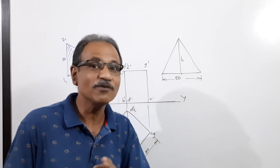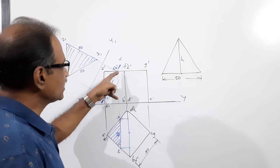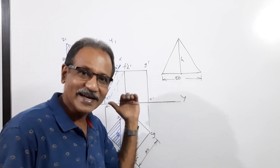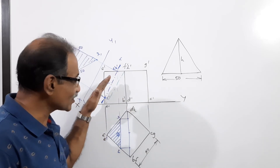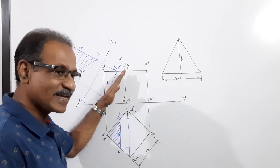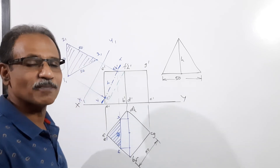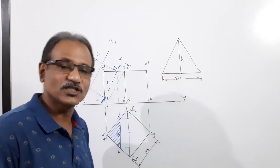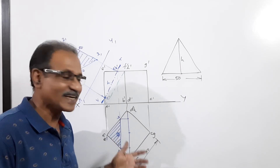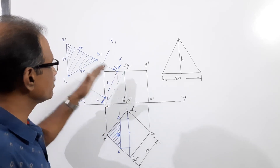Any cutting plane parallel to that will also give you equilateral triangles. So the other option is: get 50 here, get this point, and through this point draw a line parallel to the green line — that is the cutting plane. You need not find H at all; you can directly draw the cutting plane parallel to the green line connecting A' to F' to H'. That is another way of drawing the cutting plane without getting H. So you have the equilateral triangle of 50 mm side as the true shape, with the sectional plan, sectional elevation, and true shape all drawn.